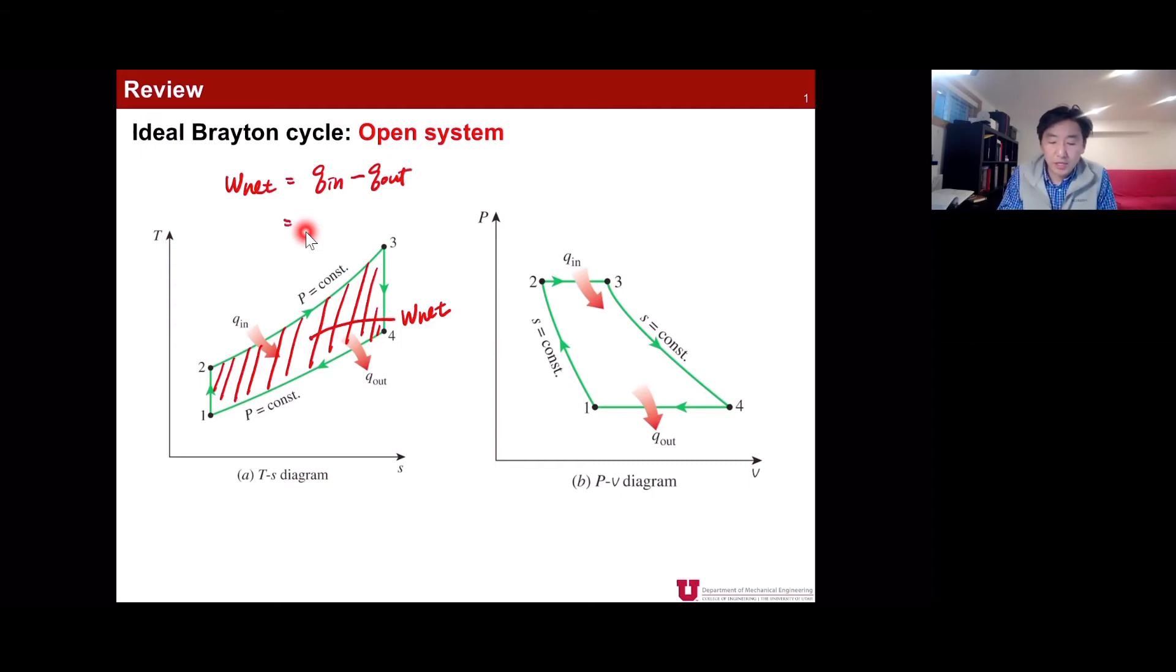The net work can be calculated by either knowing the amount of heat input and amount of heat rejection, or by knowing the expansion work at the turbine, W_T minus W_C.